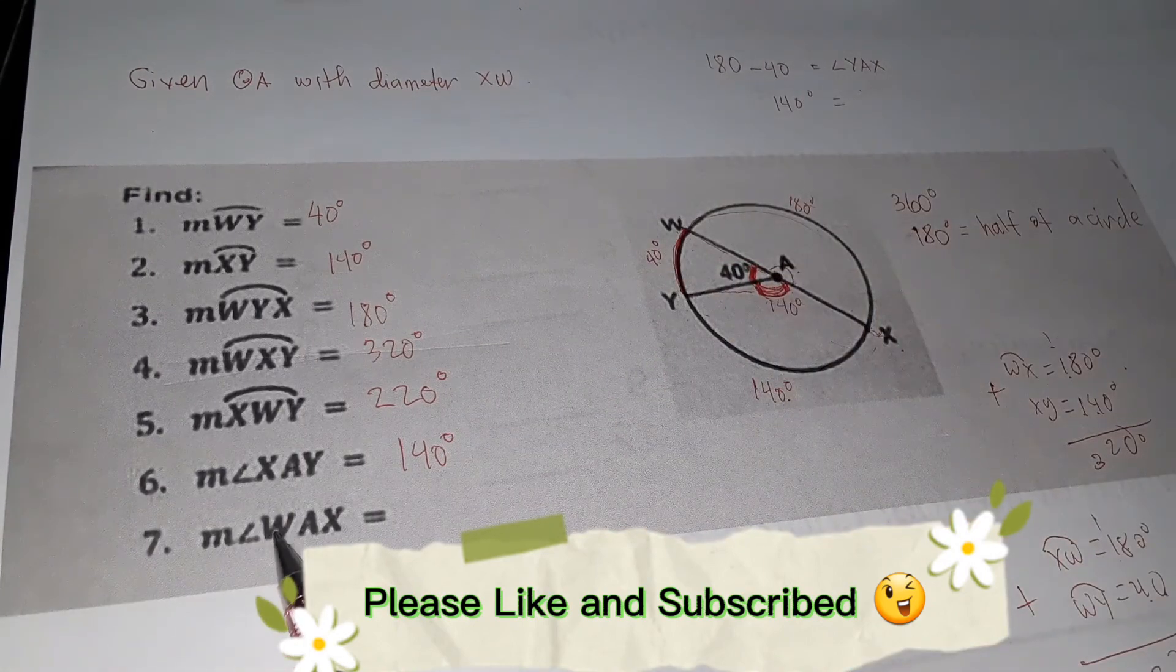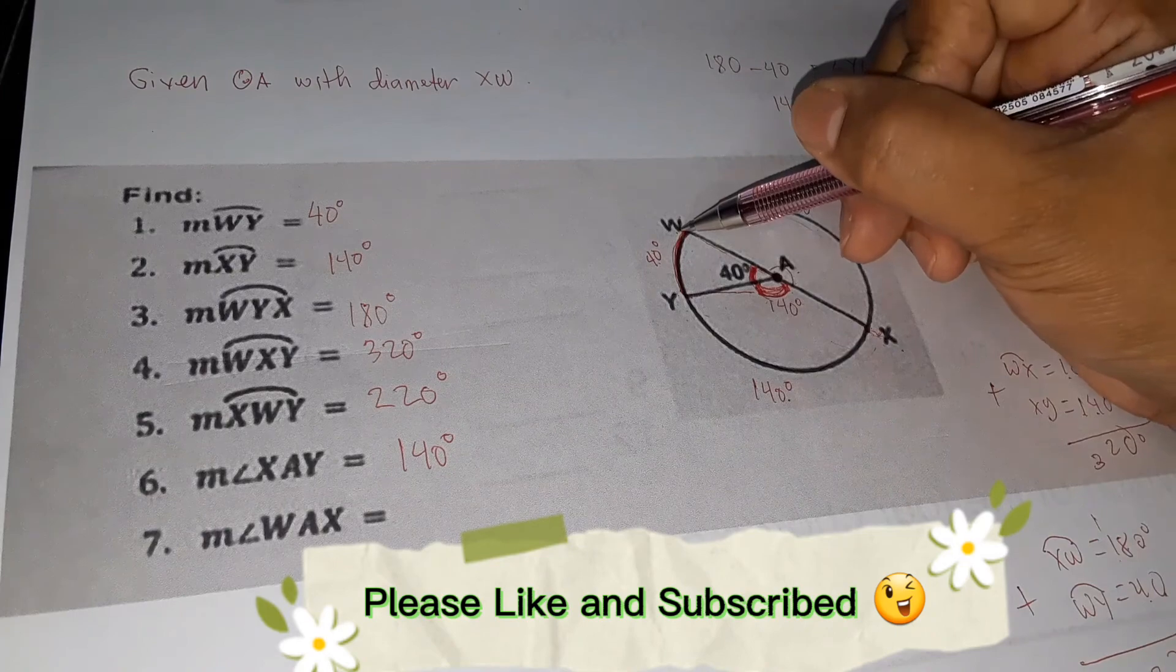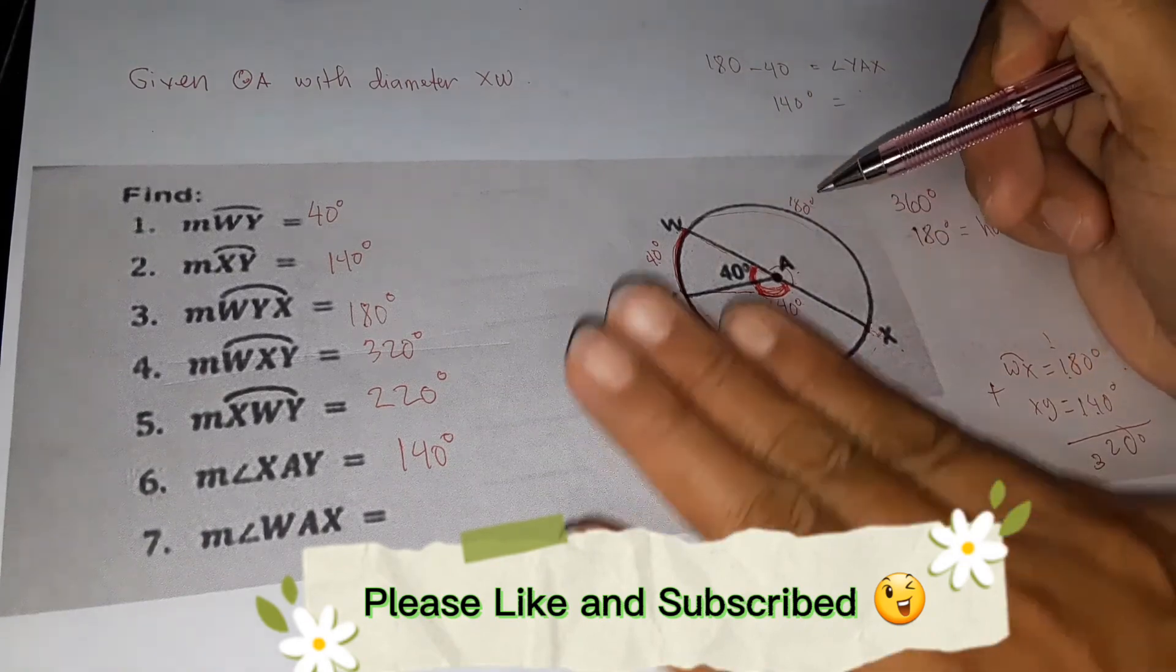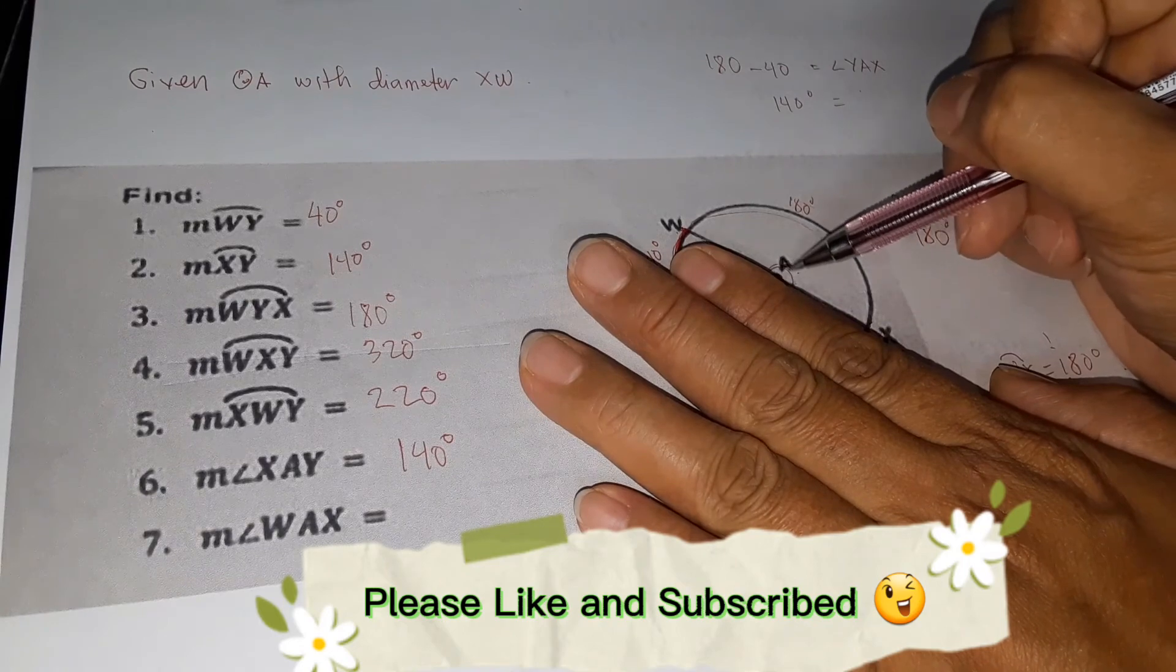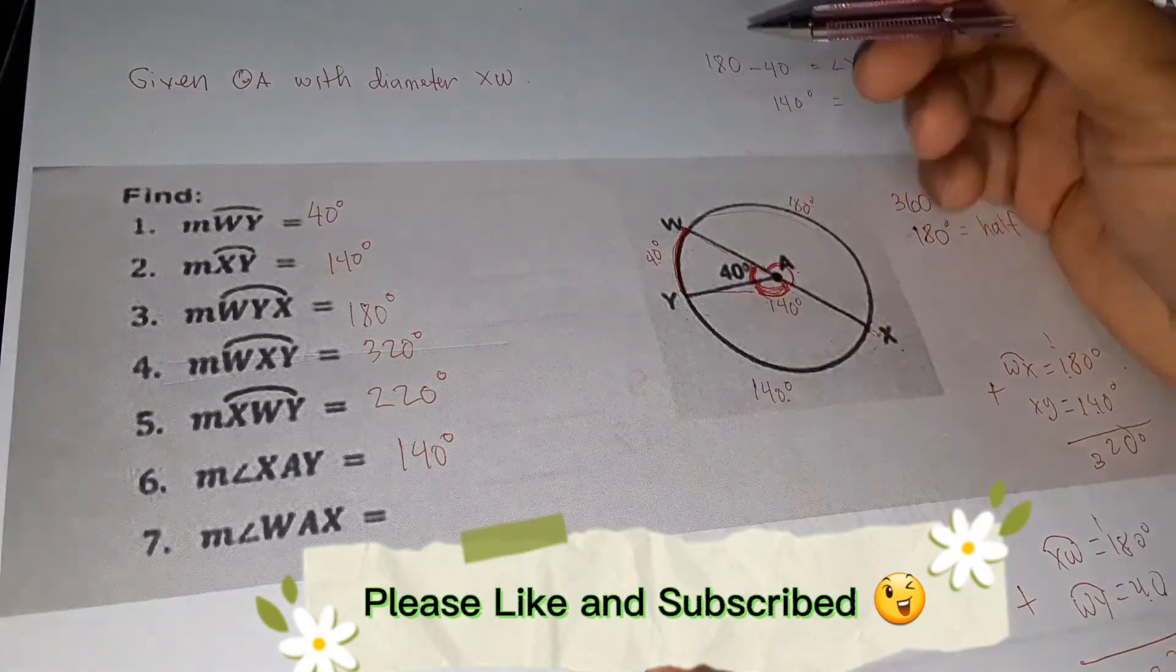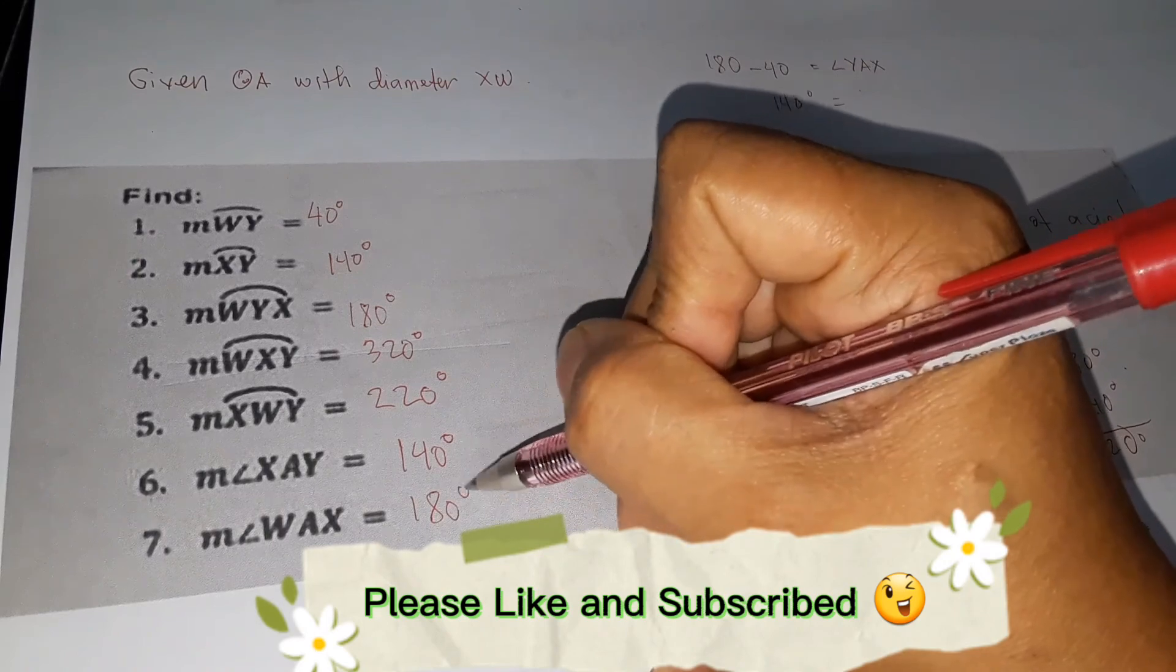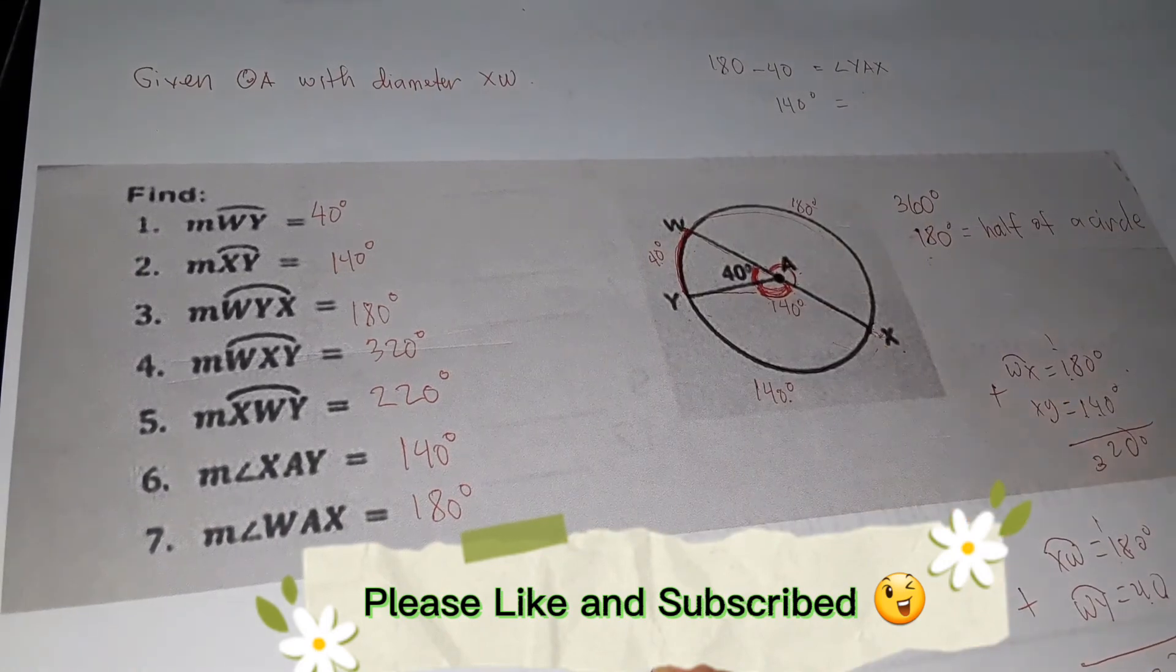And measurement of angle WAX. This is a straight line. A straight angle is always 180 degrees because that is half of a circle.